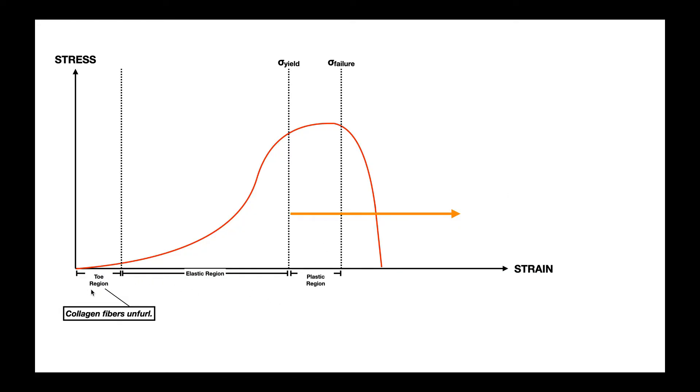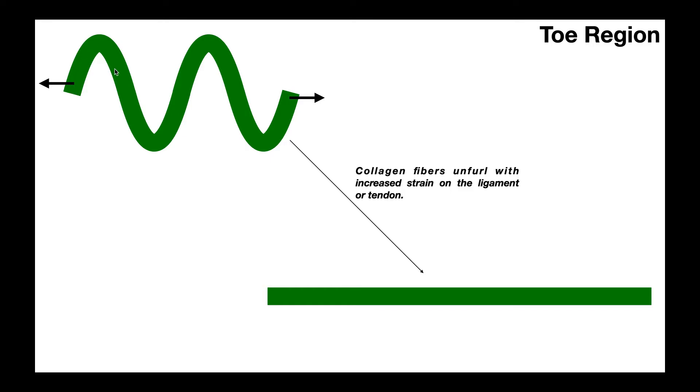So we'll begin by talking about the toe region. So the toe region is where the collagen fibers start to unfurl. So what does that mean? To unfurl means to sort of uncoil. So here's a representation of a collagen fiber before it's unfurled. So furl sort of means curled up, right? If you imagine this as a tug of war, so you have a rope like this, and you have one group on the right side, one group on the left side, and they're pulling on the rope to see who wins the tug of war battle.